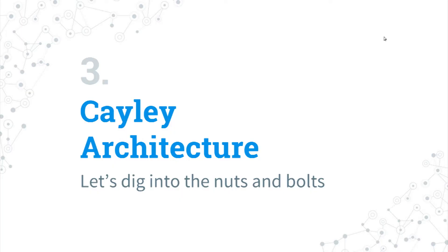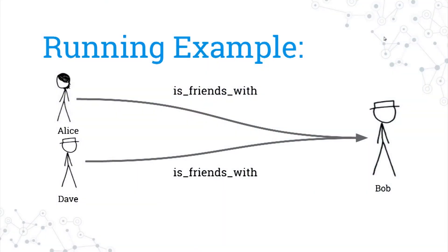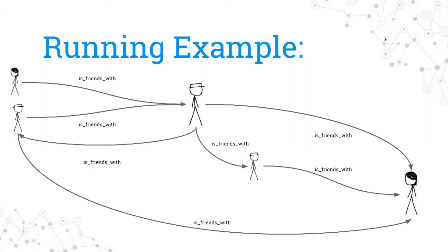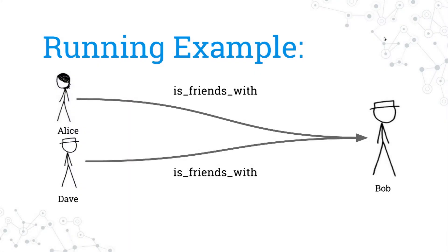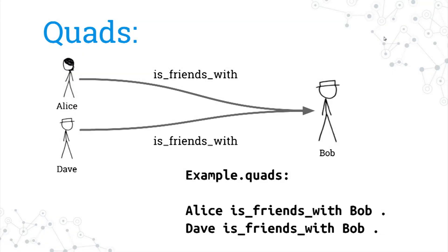So let's dive in. I was asked to do a nuts and bolts talk, so let's actually make this a real technical talk. Here's our example that we're going to be running with: Alice is friends with Bob, and Dave is friends with Bob. We want to know Bob's friends. Seems really straightforward, and obviously you can get way more complicated as things go on, but let's keep it down to this simple graph right here.